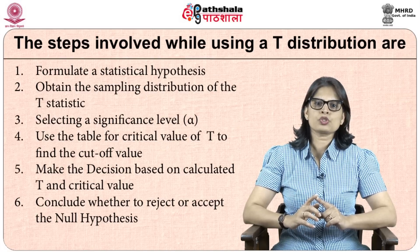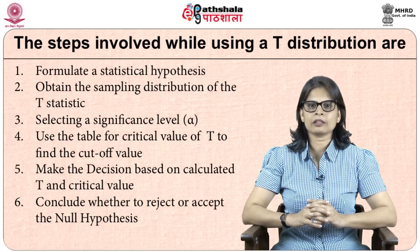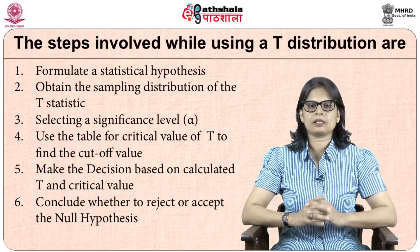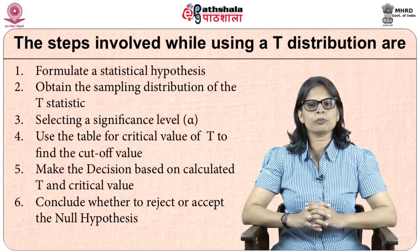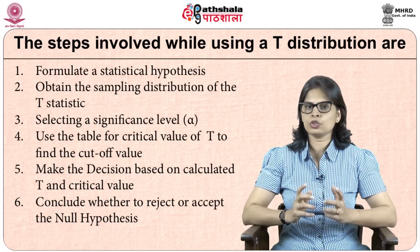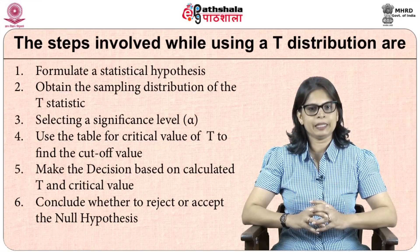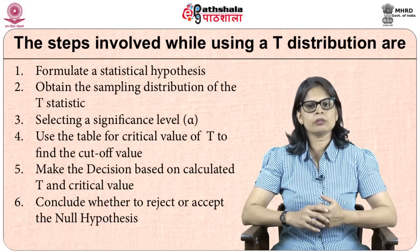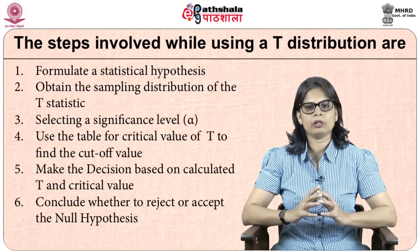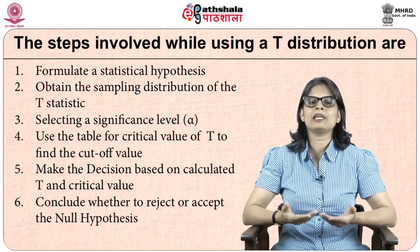The steps involved in using the t-tests are: Step 1, formulate a statistical hypothesis. Step 2, obtain the sampling distribution of your t statistic. Step 3, select a significance level, usually denoted by alpha. Step 4, use the table for the critical value of t. Step 5, make a decision based on your calculated t and the critical value from the table. Step 6, conclude whether to reject or accept the null hypothesis.